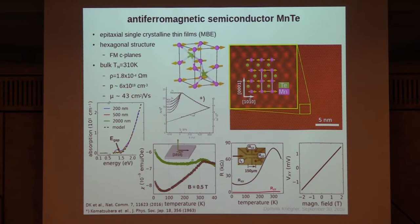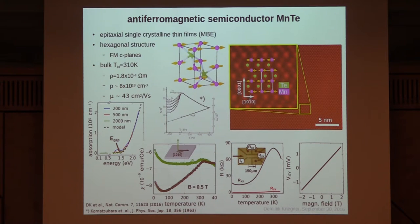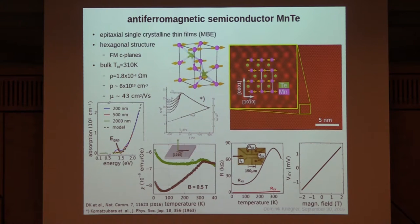We also studied basic transport properties: in the resistance versus temperature, there is a pronounced peak at the Néel temperature — not textbook-like semiconductor behavior, but clearly showing the magnetic phase transition around room temperature. It is indeed a semiconductor with hole conduction and unintentional doping of order 10¹⁸. It's not a particularly promising material for high-mobility studies; let's call it a lousy P-type semiconductor.